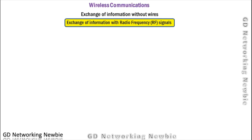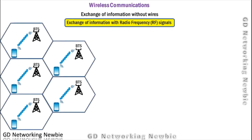The exchange of information via radio frequency signals is wireless communication. A well-known example is mobile or cellular communication. We have a handset or mobile device that uses a wireless channel between itself and a tower known as a base station, or BTS — Base Transceiver Station. The tower and the mobile exchange information using a wireless medium, with no wires in between.